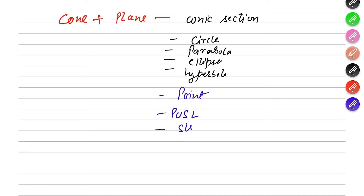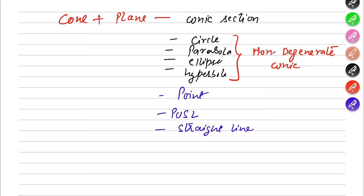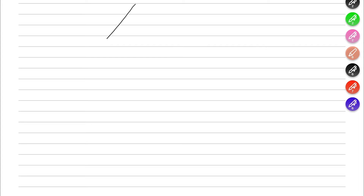The circle, parabola, ellipse, and hyperbola are called non-degenerate conic sections, whereas the point, pair of straight lines, and straight line are called degenerate conic sections. So what is the difference between non-degenerate and degenerate conic sections? Let us see.